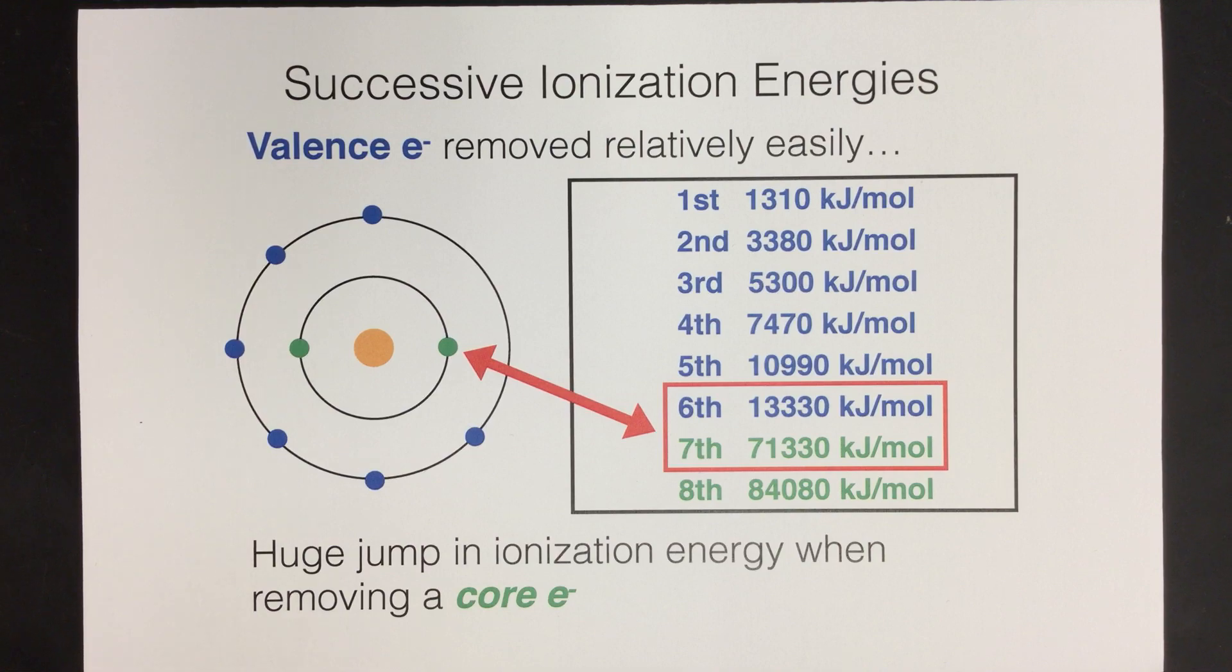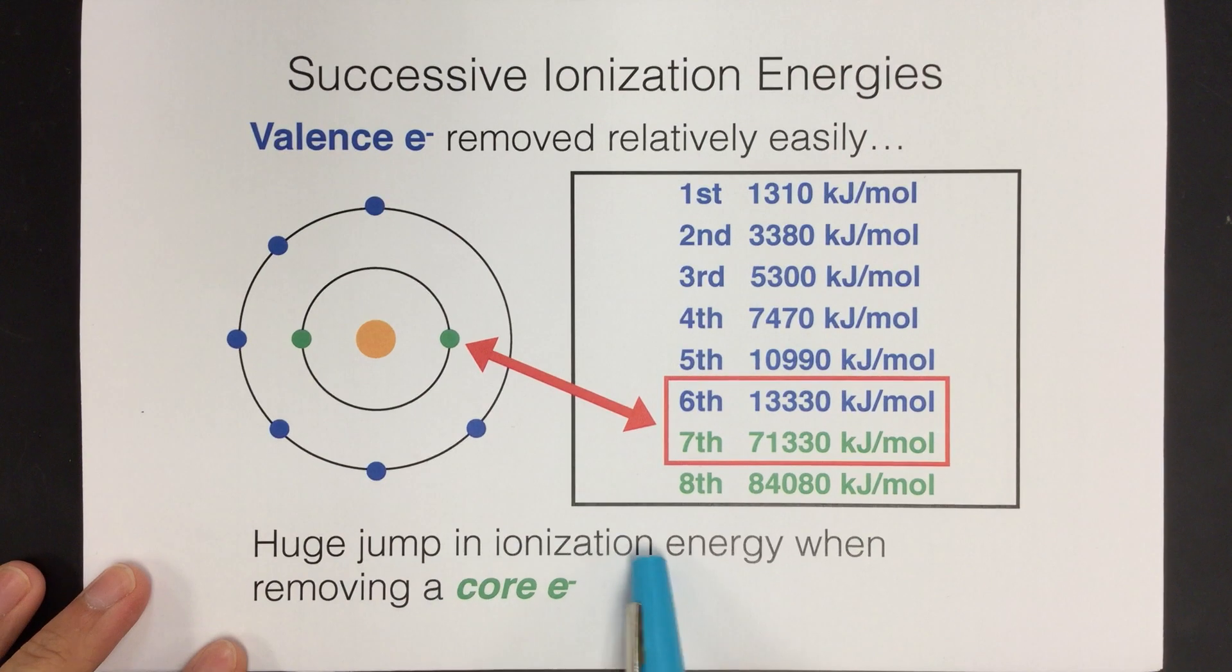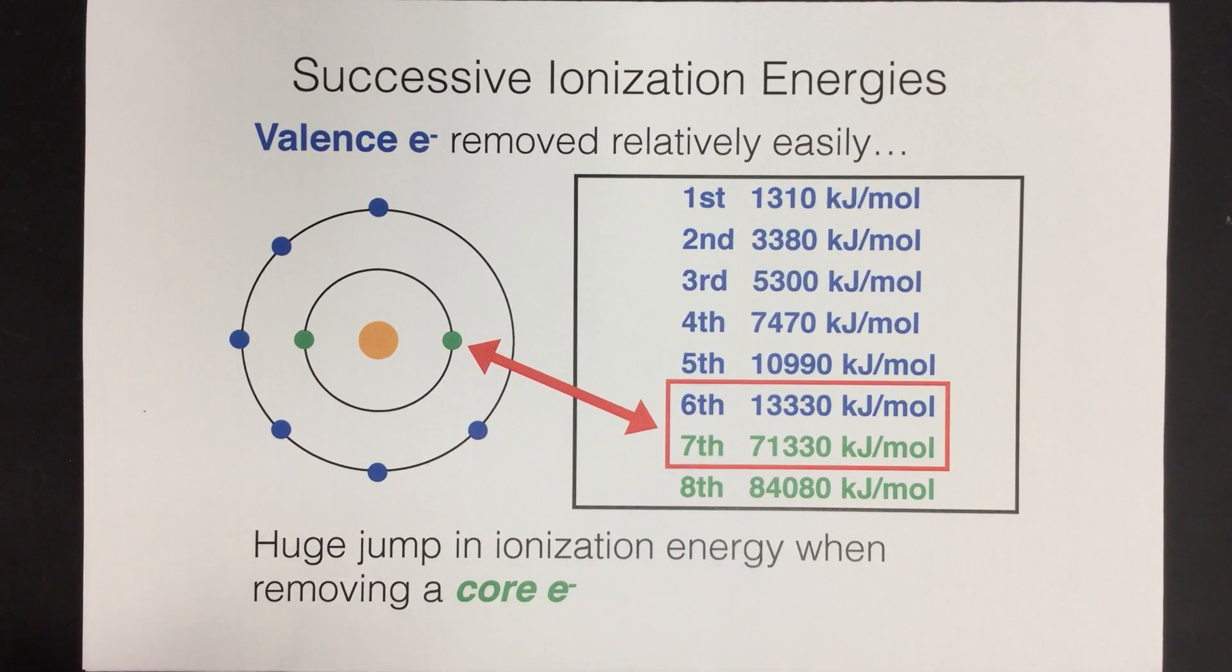So it's the amount of energy required to remove more and more electrons, and we can track that. And what we notice is a type of trend where we can kind of predict when there's going to be a big jump in ionization energies when we remove a certain type of electron.